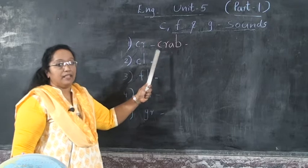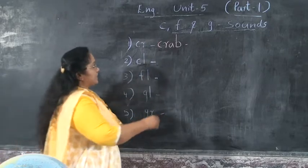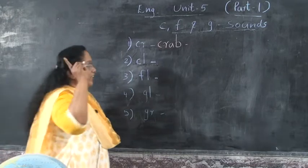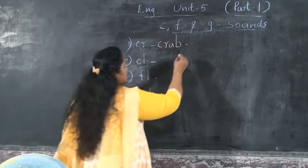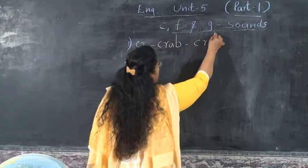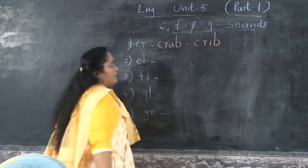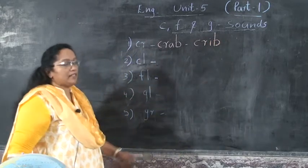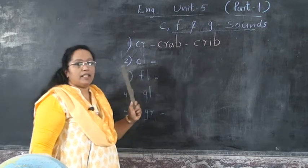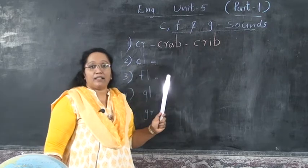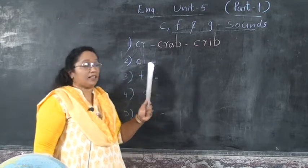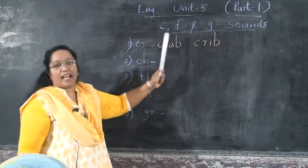Say loud: C-R-A-B. Crab. What's the spelling of crab? C-R-A-B. Next is crib. Crib. C-R-crib. C-R-I-B. Crib. Say loud, children: C-R-I-B. Say two words starting with CR. Crab and crib.